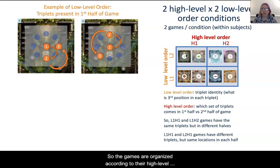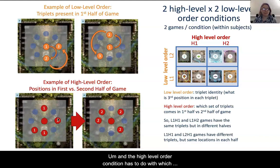So the games are organized according to their high level order condition and their low level order condition. The low level order condition consists of the identity of different triplets of positions that will occur in each game. And the high level order condition has to do with which positions and which triplets covering those positions occur in the first half of the game and which positions occur in the second half.